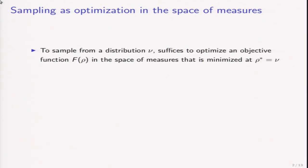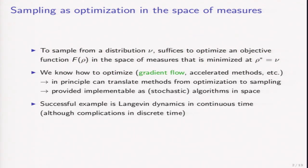Sampling can be viewed as optimization in the space of measures. If we want to sample from a target distribution, we can set up an objective function in the space of measures that is minimized at the target distribution, and then optimize this objective function. We know how to optimize in rather general settings, for example via gradient flow or accelerated methods. In principle, we can translate methods from optimization to sampling by applying them to this problem in the space of measures, provided we can implement the resulting methods as possibly stochastic algorithms in space.